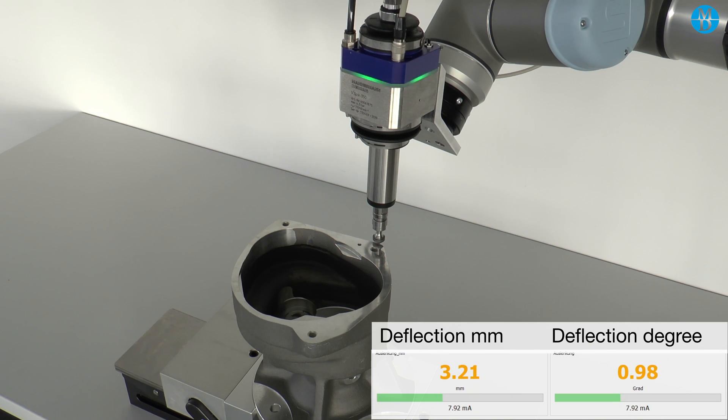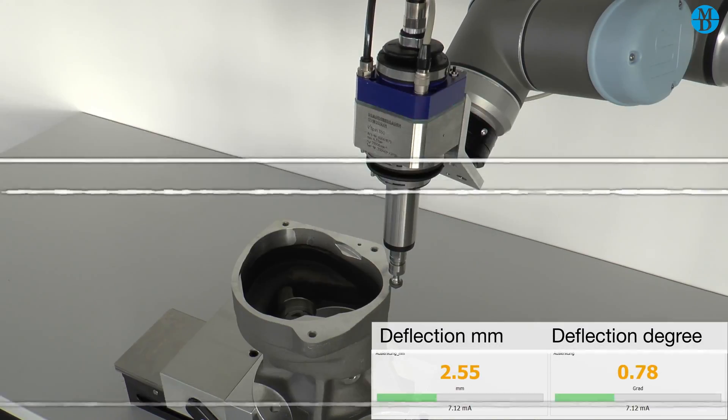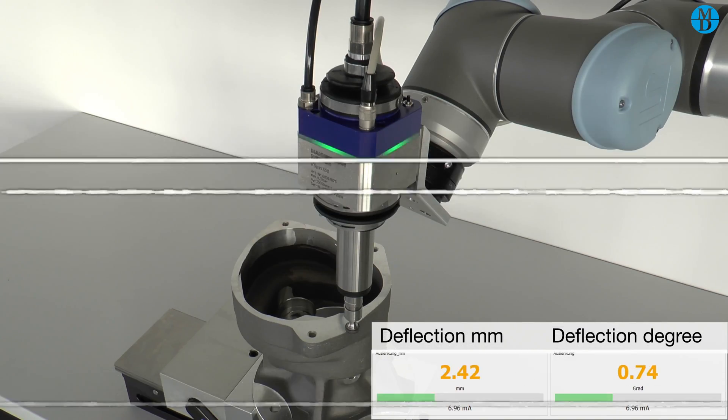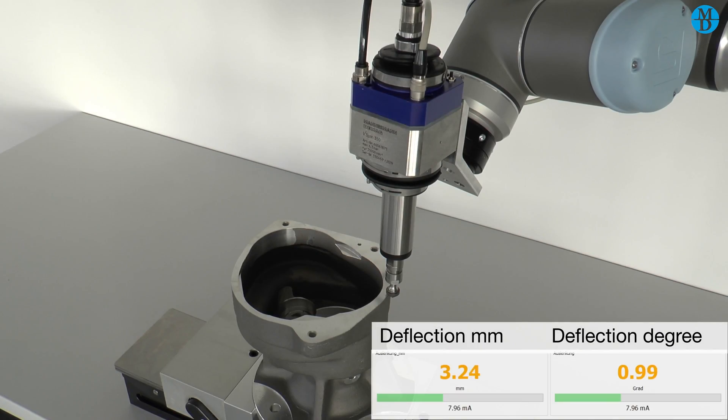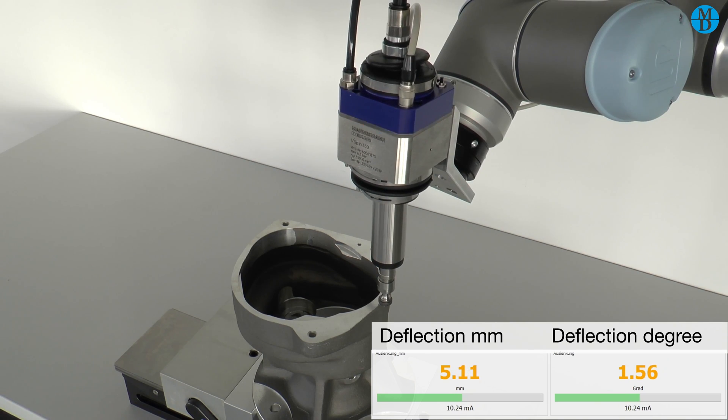We will now set the next waypoints using the same method. Here we have a position between two waypoints where we will be outside of the optimal deflection threshold. It is only 0.05 degrees, but nevertheless it should be corrected. We can either change an existing waypoint or add an additional waypoint to address this.